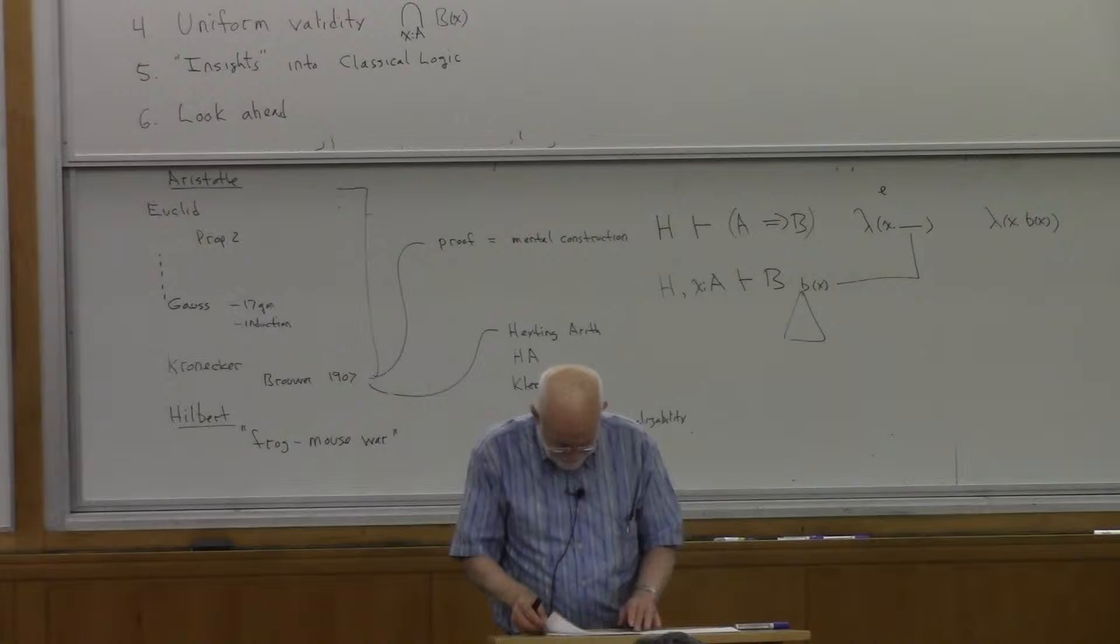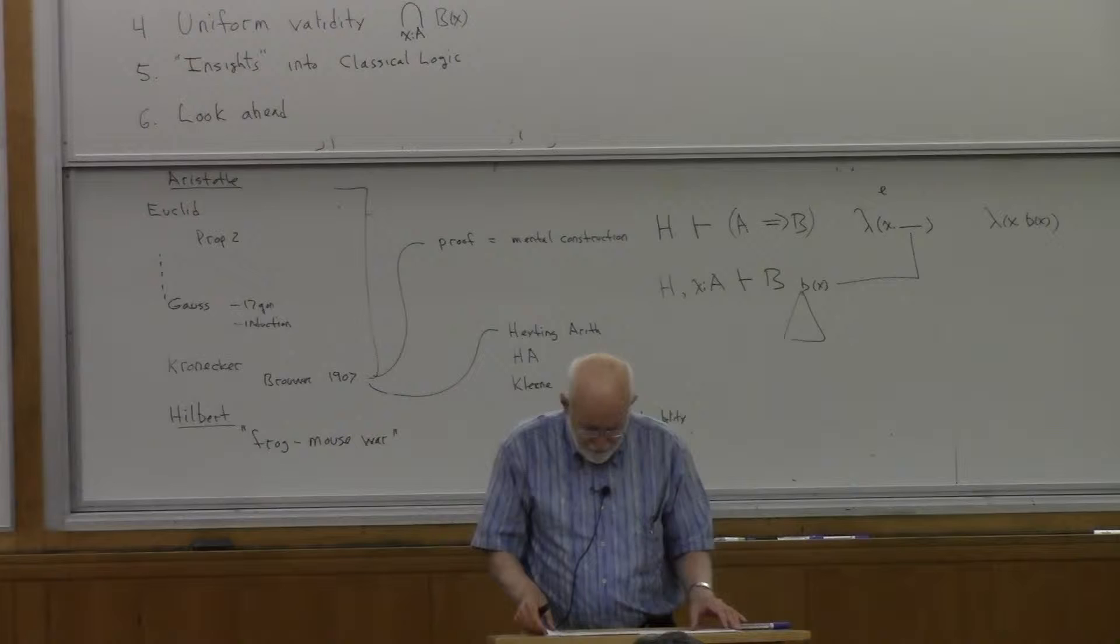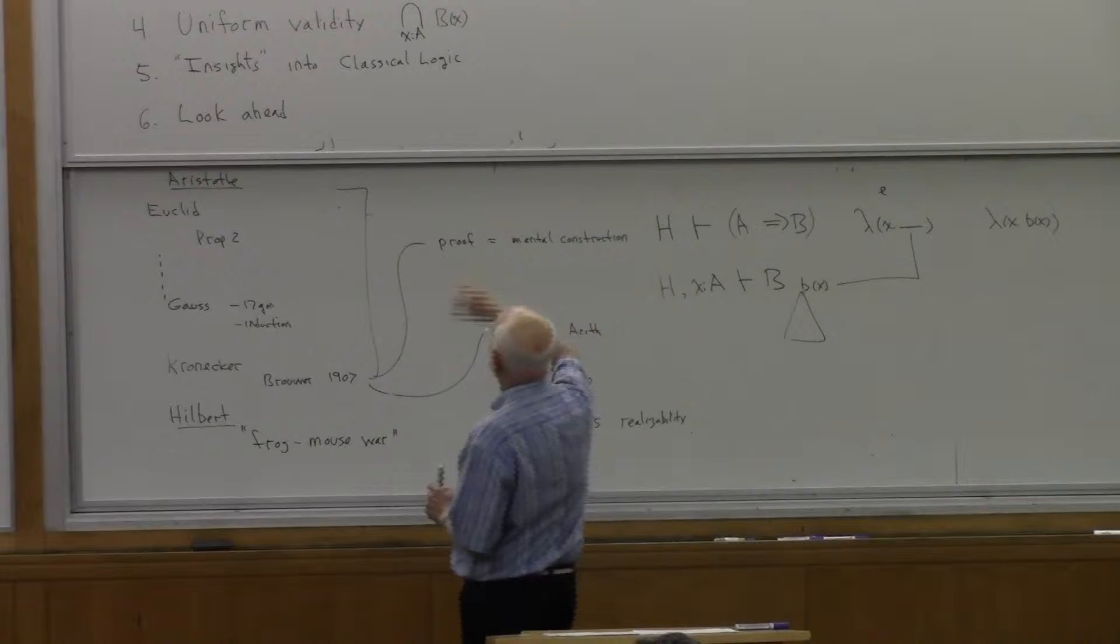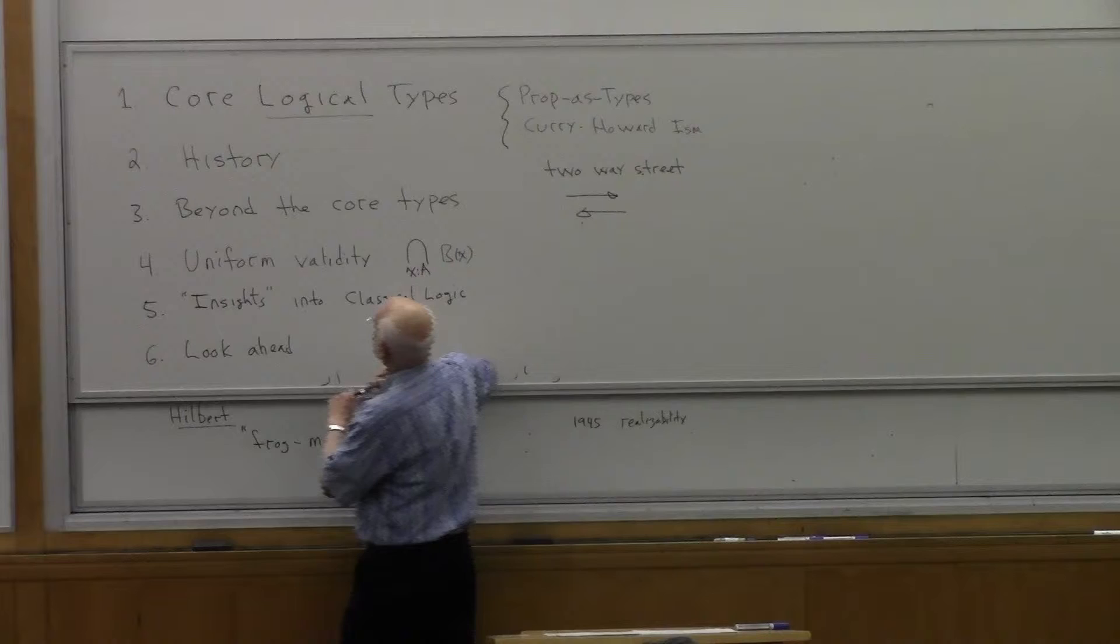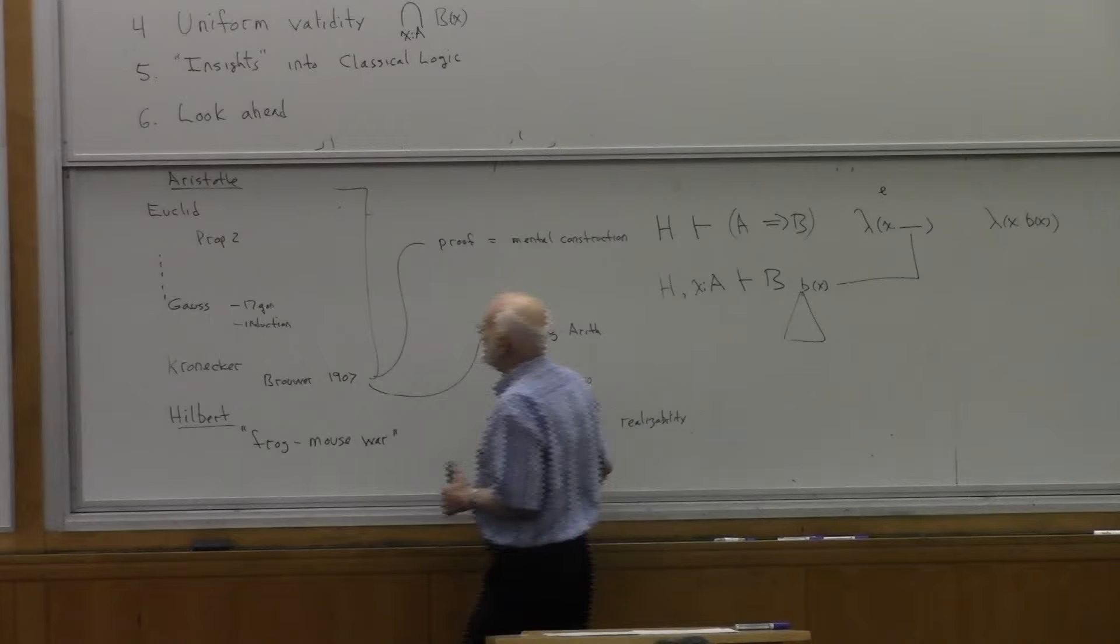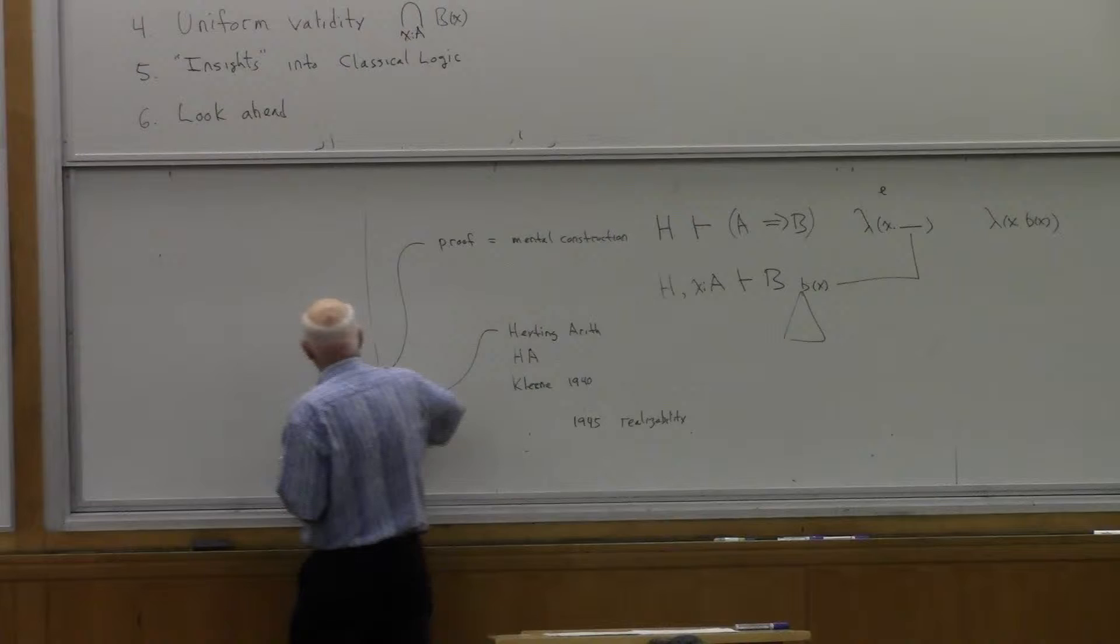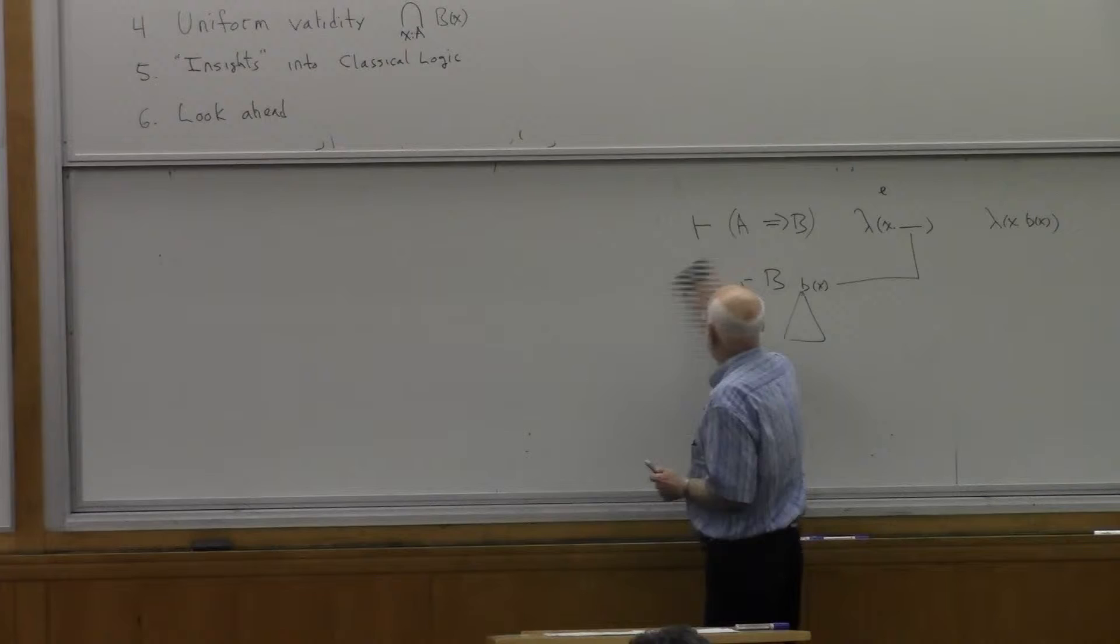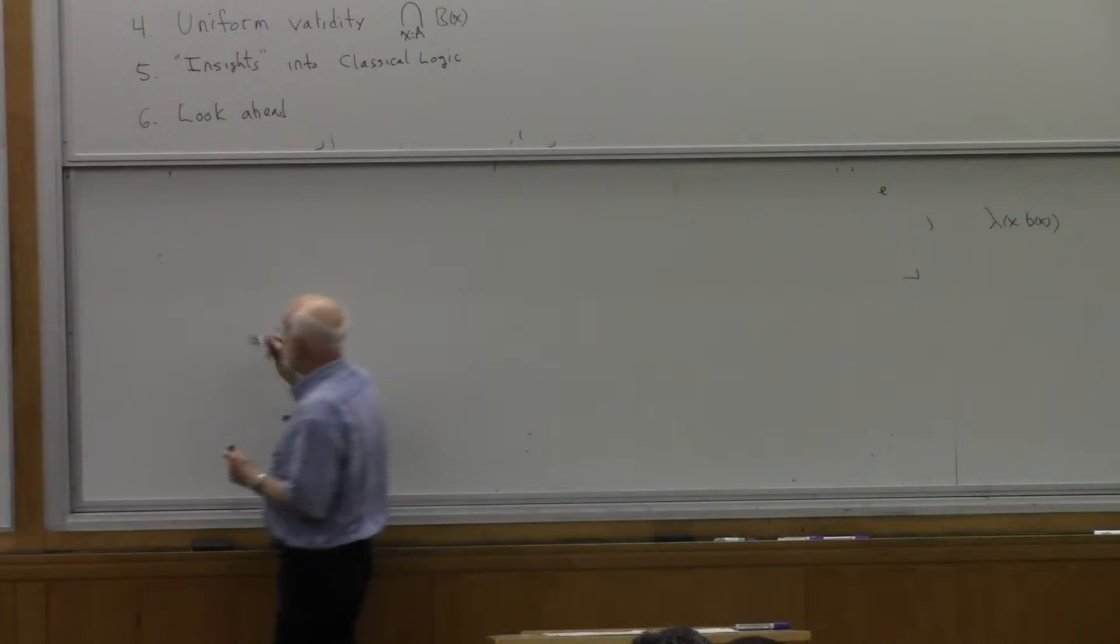Let's see then what happens when you go beyond these types. So let's look at what happens beyond the core. Where are we? We've done history. Now we're going to do beyond the core types. So let's think about some other types that are pretty useful. And you've already seen the intersection type. That's been used in these lectures.